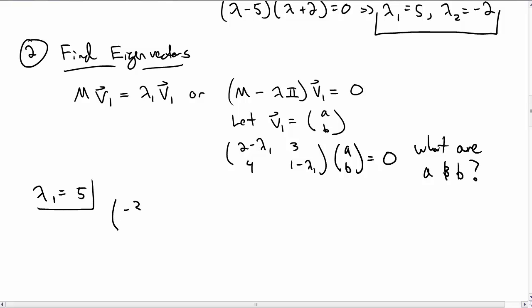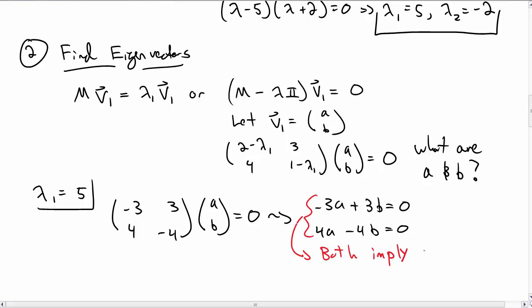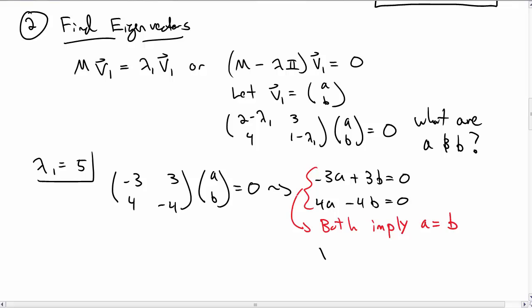So let's take λ1 = 5. Then we get (-3, 3, 4, -4) times (A, B) is equal to 0. Writing that out we get -3A + 3B = 0 and 4A - 4B = 0. It's pretty clear to see that both of these imply that A is equal to B. And in fact they're degenerate equations. So there's only one condition which is A = B. And that's all we know.